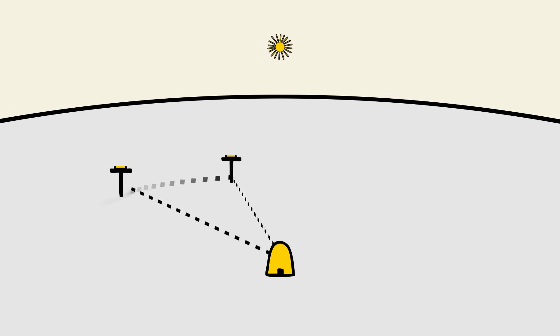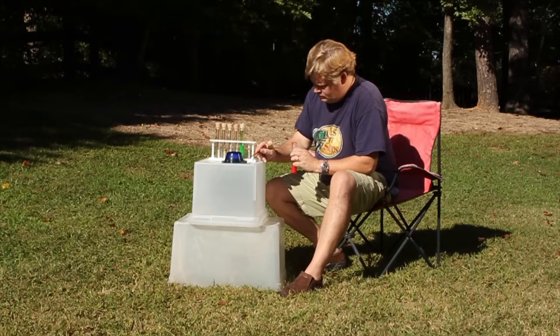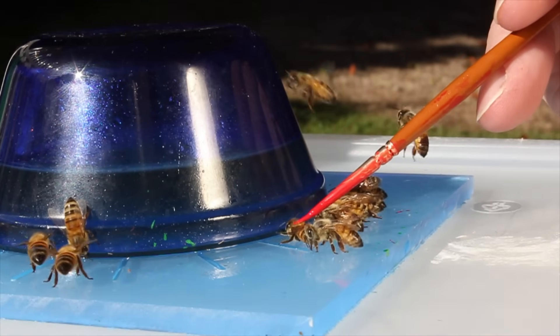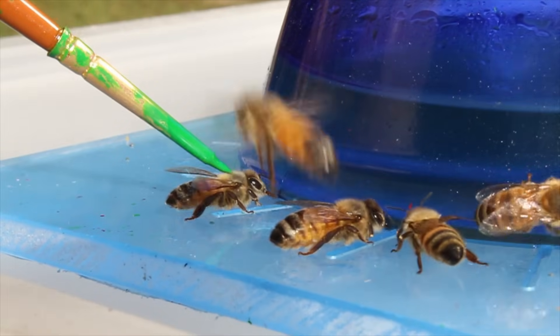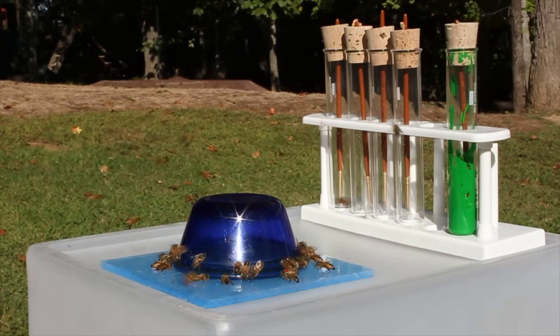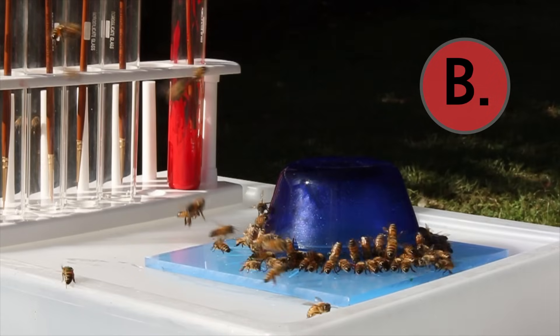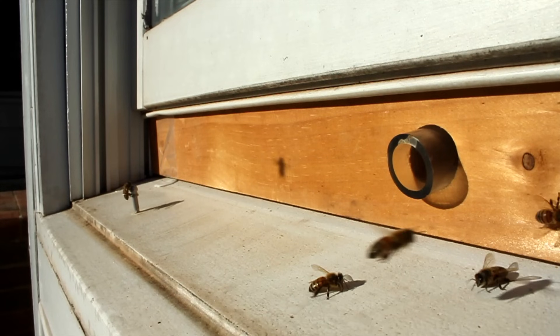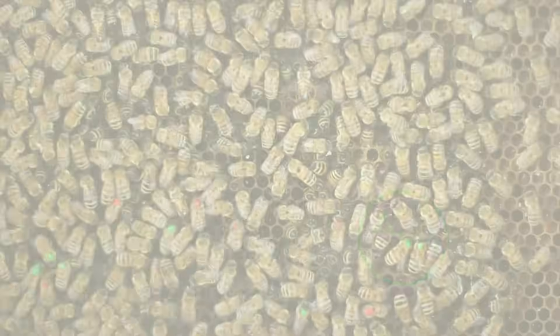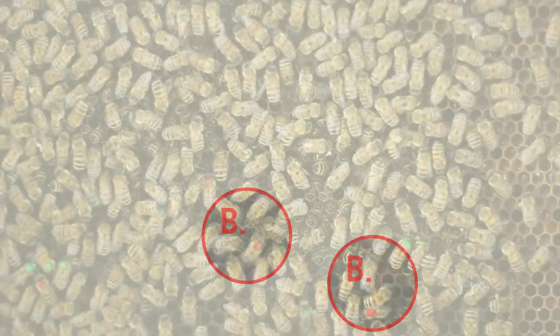Two feeders are placed in different directions away from the hive. At each location, visiting honeybees are marked with a small spot of paint. A separate color of paint is used at each station. So, when a bee returns to the hive, it can easily be determined which feeding site it visited.